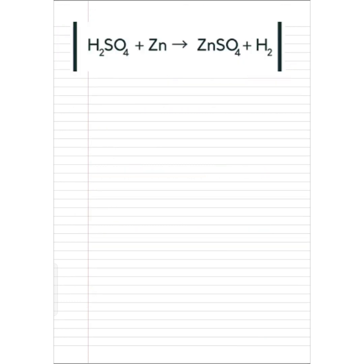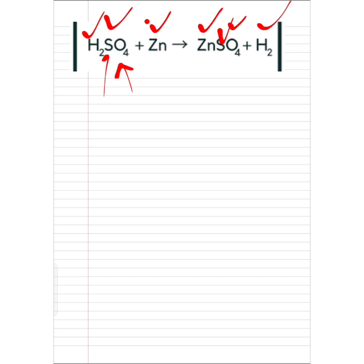This is a very common reaction: zinc reacted with H2SO4, that is sulfuric acid. Now how will we balance this? Let's check for oxygen — oxygen is 4 on this side and 4 on this side, so oxygen is balanced. Hydrogen is 2 here and 2 here, so hydrogen is also balanced. Sulfur on this side and sulfur on this side — both sides sulfur atom is 1, it's also balanced. Zinc on this side and zinc on this side. So this chemical equation is already balanced.